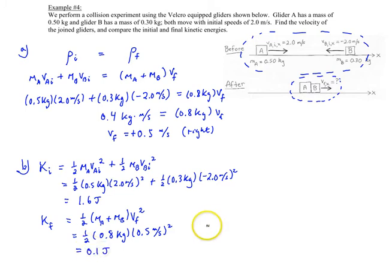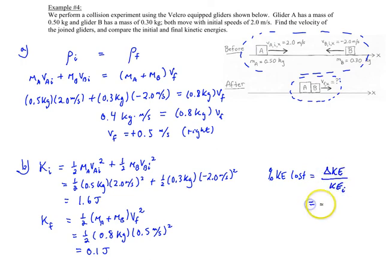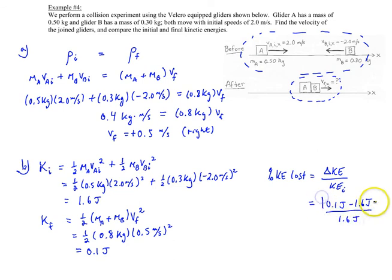There is a considerable amount of kinetic energy lost. We can calculate the KE lost, which is the change in kinetic energy divided by the initial kinetic energy — that's the final KE of 0.1 joules minus 1.6 joules, divided by the initial KE of 1.6 joules. Taking the absolute value to get a positive percentage, that gives us 93.75% lost — quite a bit of kinetic energy. And that's example 4.